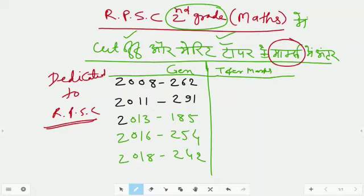Let's start. Look, I have given you the general criteria. The exams are conducted by your secondary education department: 2008, Merit General 262; 2011, 291; 2013, 185; 2016, 254; 2018, 242.